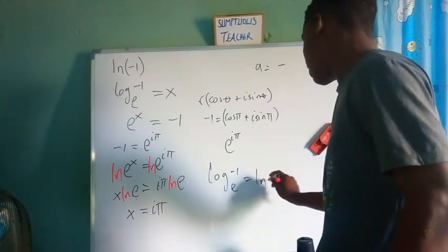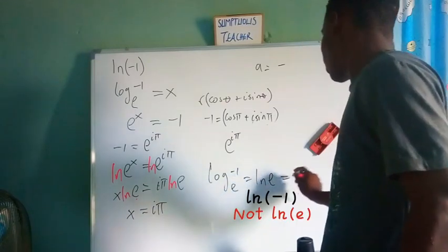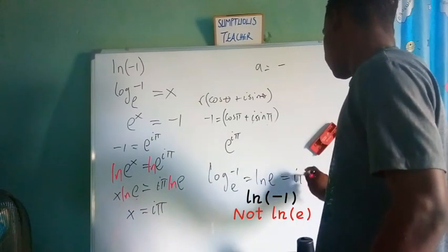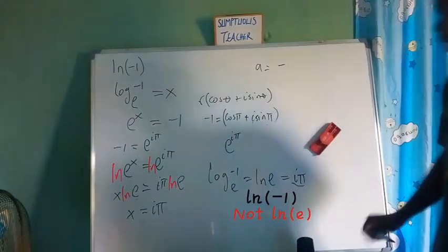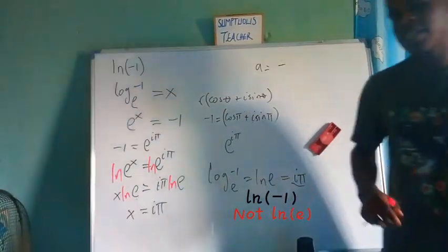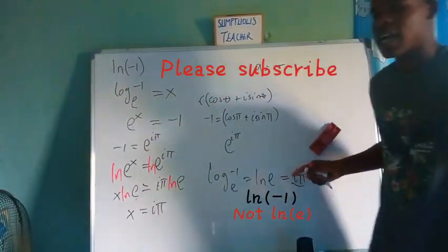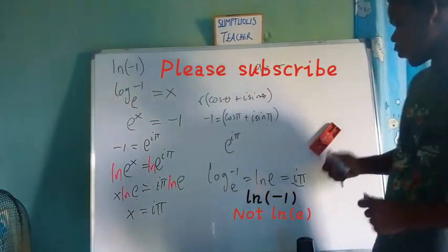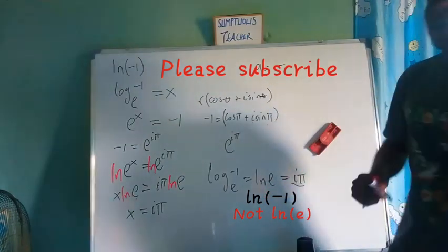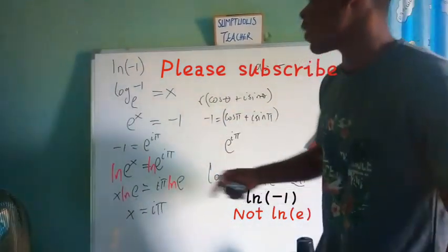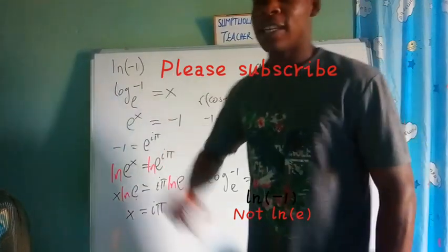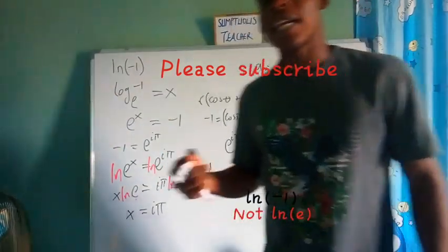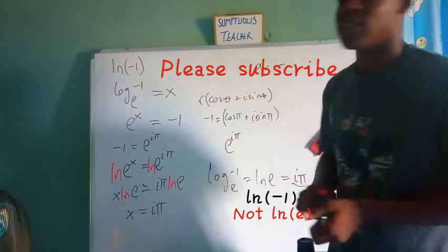Therefore the natural logarithm of negative one equals iπ. Since iπ contains i, it does not belong to the set of real numbers — it belongs to the set of complex numbers. So we can actually find the natural log of a negative number. Thanks for watching, please subscribe to this channel.